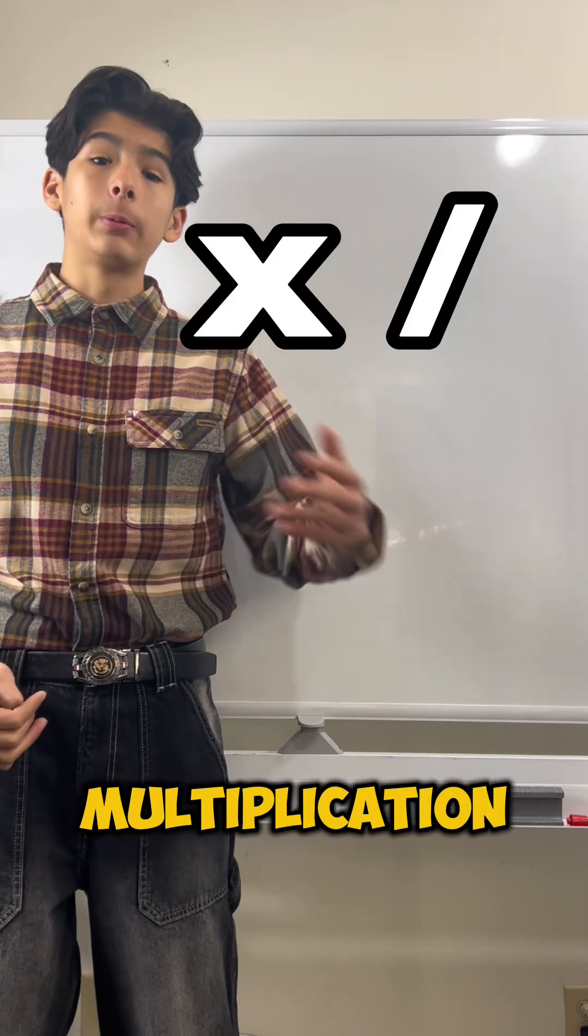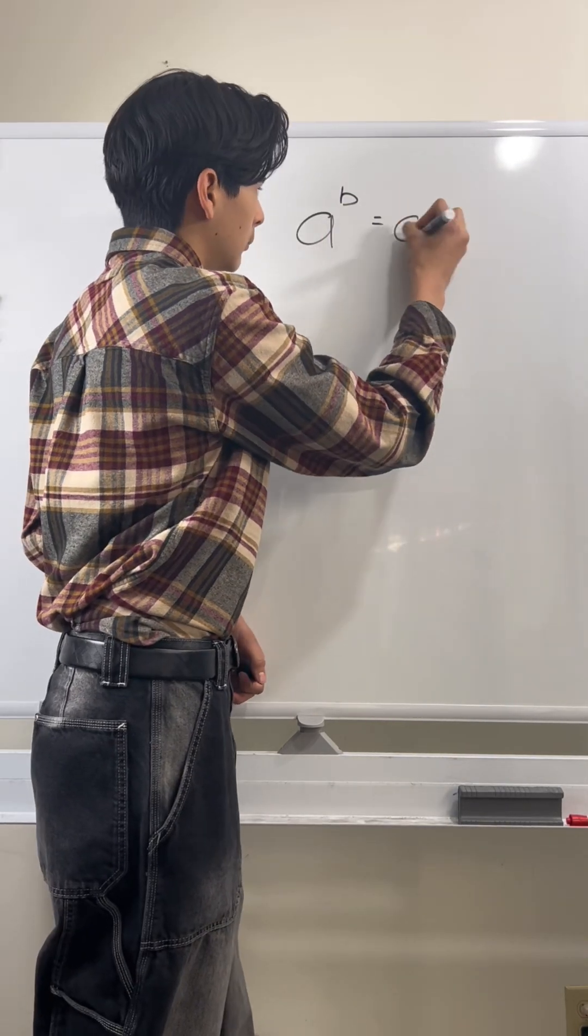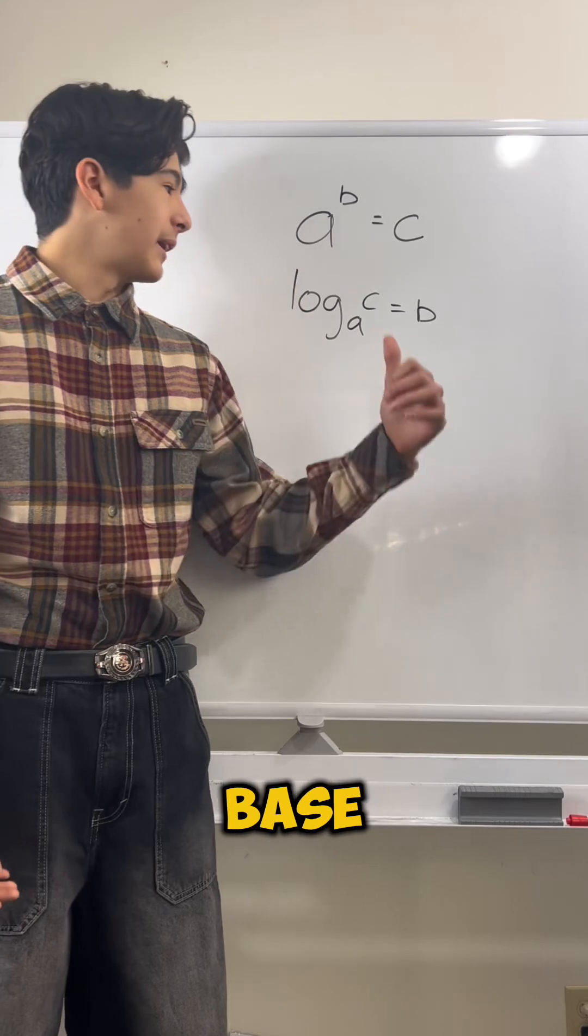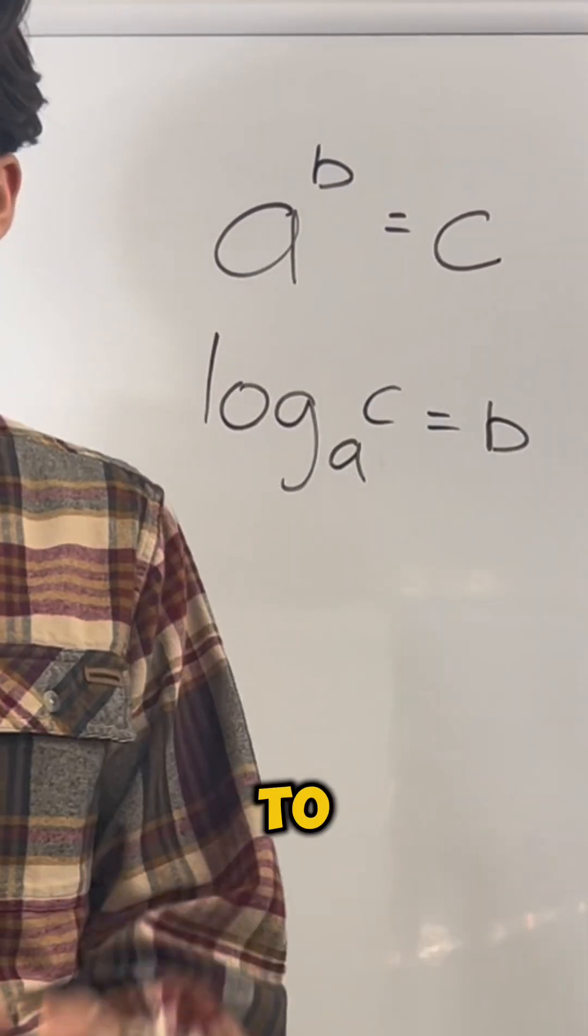So for example, if a to the b power equals c, then logarithm base a of c is equal to b. It tells you that if you raise this number to a certain power it will equal this number, and that certain power would be what the logarithm is.